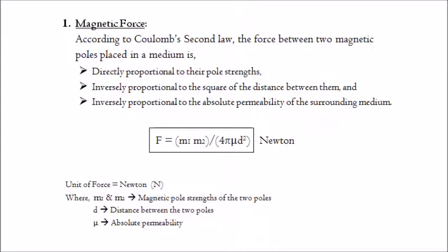1. Magnetic force. According to Coulomb's second law, the force between two magnetic poles placed in a medium is directly proportional to their pole strengths, inversely proportional to the square of the distance between them, and inversely proportional to the absolute permeability of the surrounding medium. It is given as: F equals m1 multiplied by m2, whole divided by 4π·μ·d².